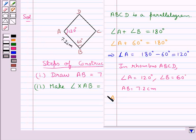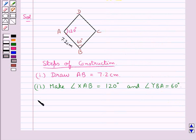Now since ABCD is a rhombus, so all the sides of ABCD rhombus are equal, that is we have AB is equal to BC is equal to CD is equal to DA is equal to 7.2 cm.